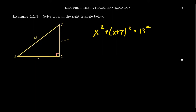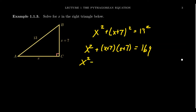To begin, we FOIL out (X + 7)², meaning (X + 7)(X + 7). And 13² equals 169. FOILing gives X² + 7X + 7X + 49, which still equals 169. Combining like terms, we get 2X² + 14X + 49 = 169.